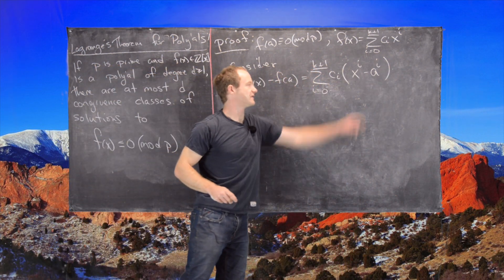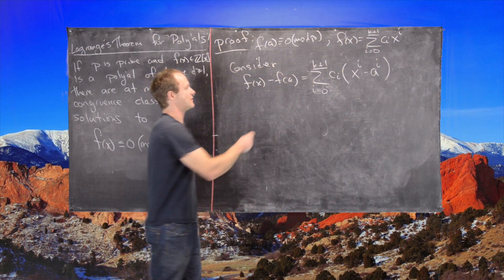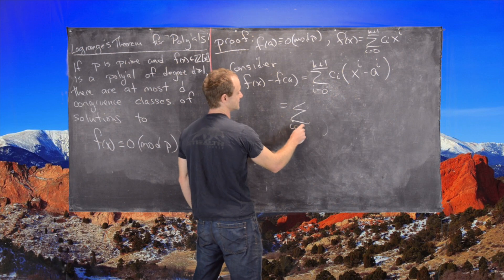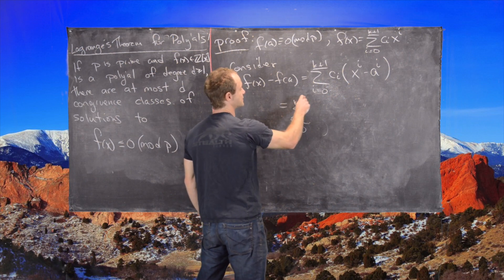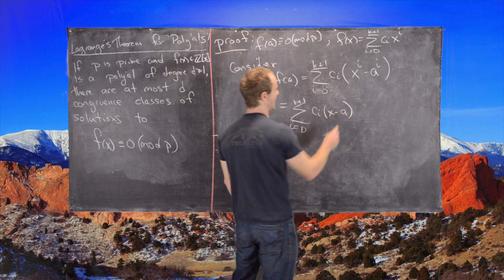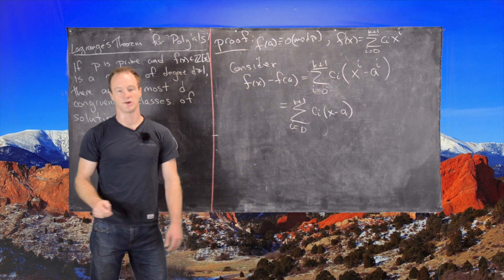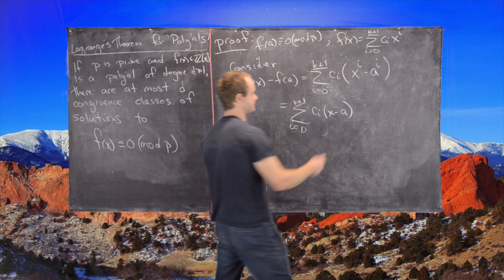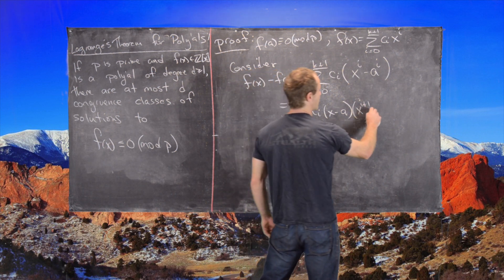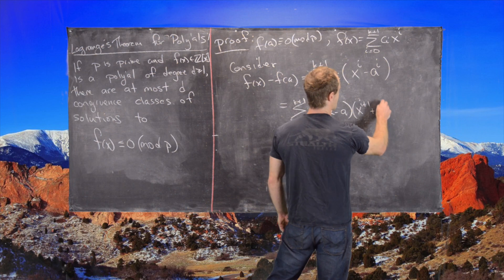From here, we can factor this using a well-known factoring formula. This is equal to the sum I equals 0 to K plus 1 of C of I, X minus A.